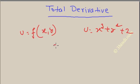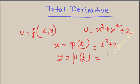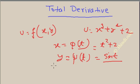The main point is that if X itself is a function of another variable — suppose X is a function of T, and Y is also a function of T — suppose X is t² + 2 and Y is sin(t). What you are seeing here is that X is a function of T and Y is also a function of T, so the whole function u is totally dependent on T only.